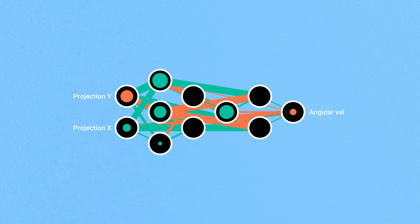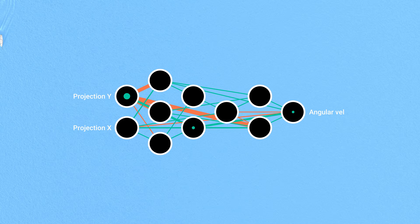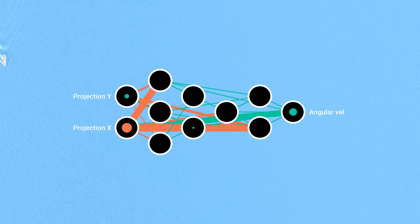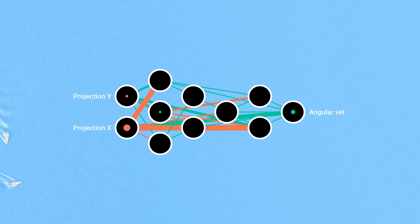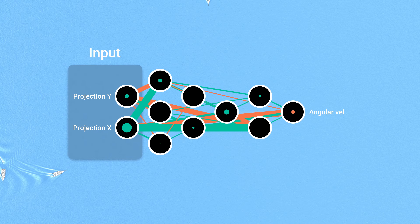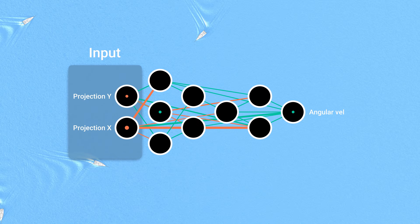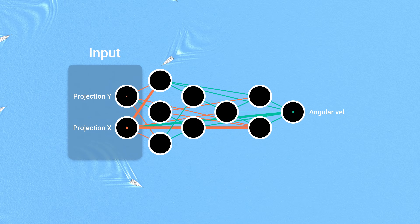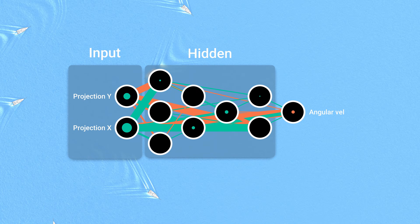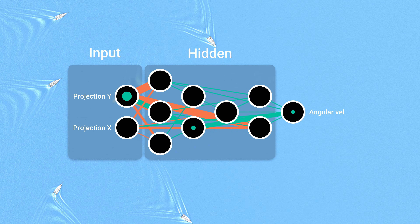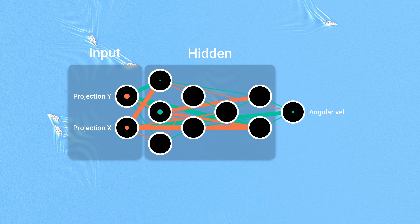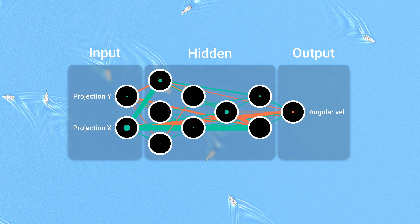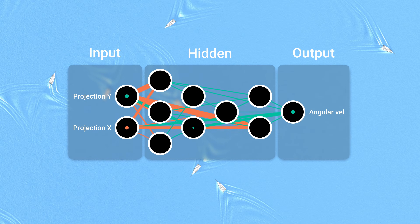Driving each boat is a small neural network. It uses the observations to estimate the optimal angular velocity for reaching the checkpoints. These networks have two inputs, corresponding to the projections discussed earlier. Next come the hidden neurons, which are added incrementally as training progresses. Finally, a single output enables the network to control the boat's direction.